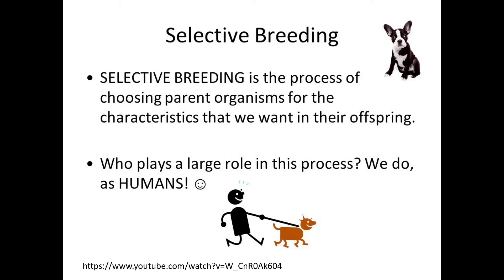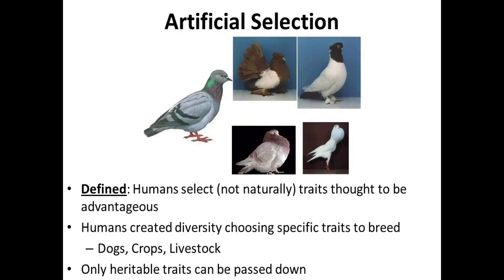Next is selective breeding, also known as artificial selection. Selective breeding is the process of choosing parent organisms for the characteristics that we want in the offspring. Humans are the selective breeders, selecting traits they consider advantageous — such as faster reproduction. Humans create diversity by choosing specific traits to breed dogs, crops, and livestock. Only heritable traits can be passed down.